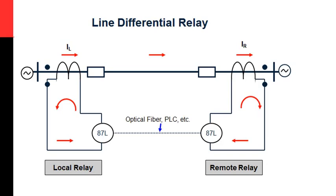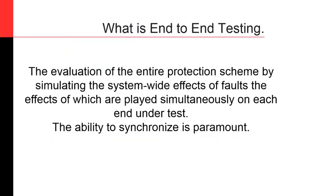Someone might think: I will apply the signal to the local relay and see if it picks up, then apply a signal on the other end to the remote relay and see if it picks up, and then I'm happy. But there are so many issues that could happen with the communication between the relays and with the interpretation of the signals made at both ends. The only way to ensure proper testing is to apply signals at the same time on the relays and evaluate whether both relays acted properly. So, this is what end-to-end testing is about.